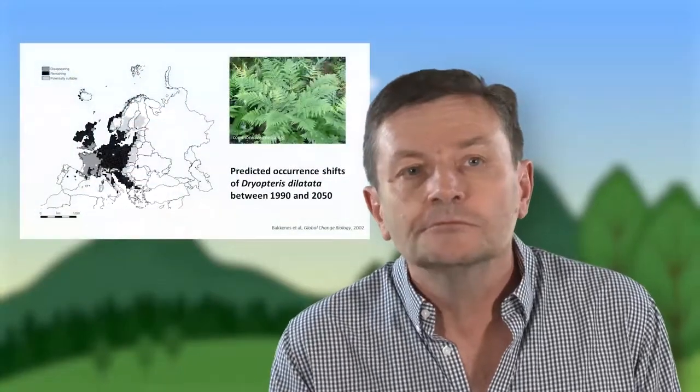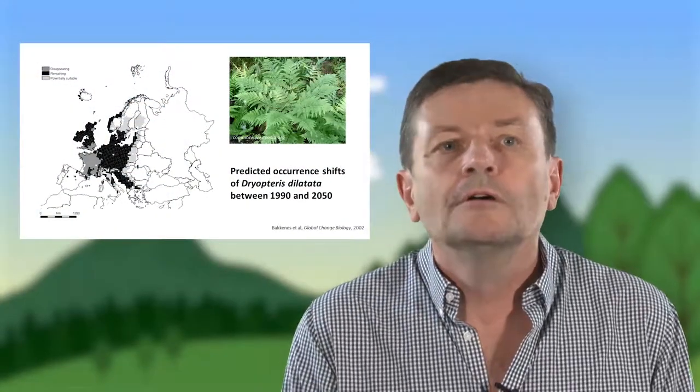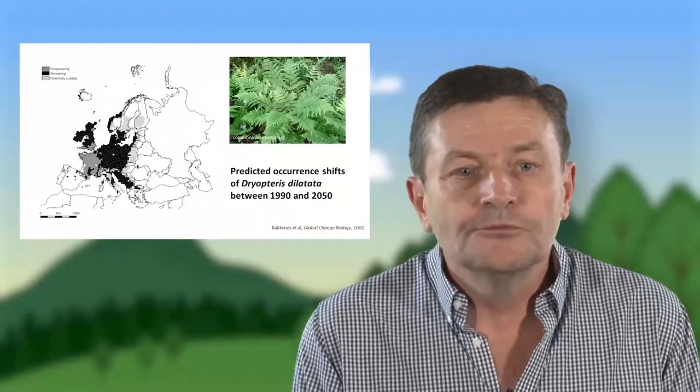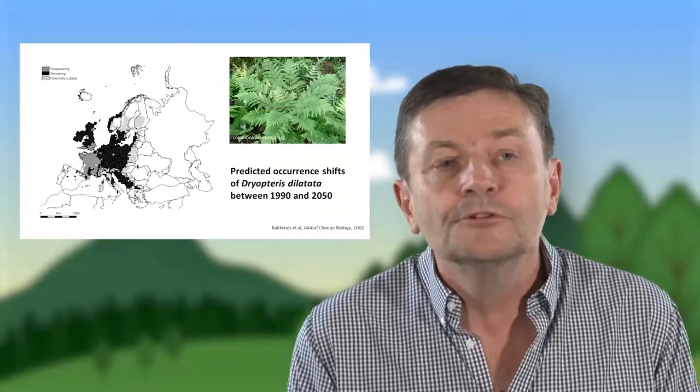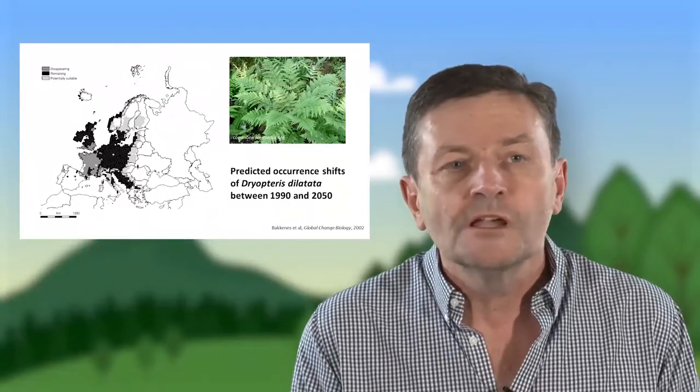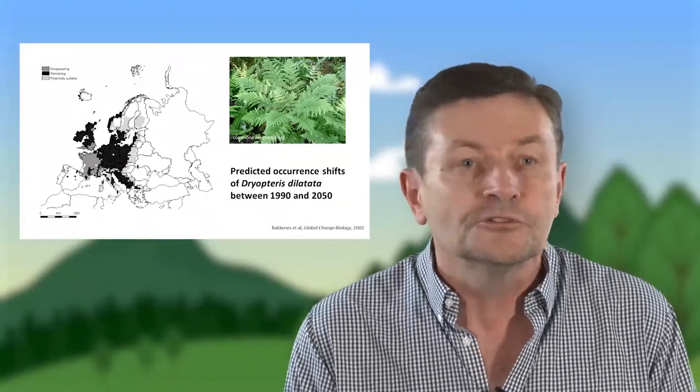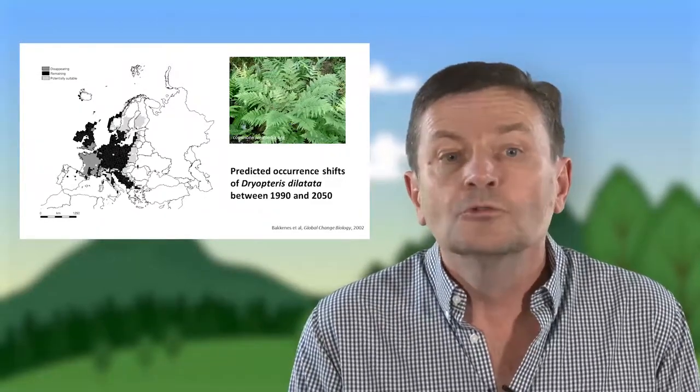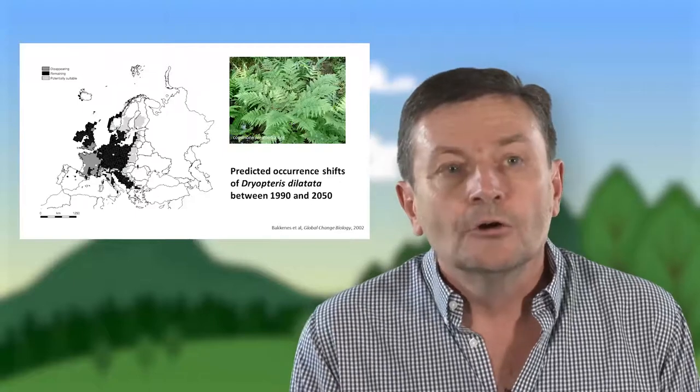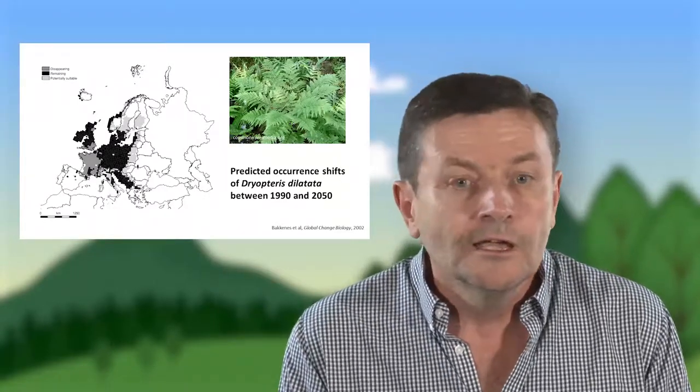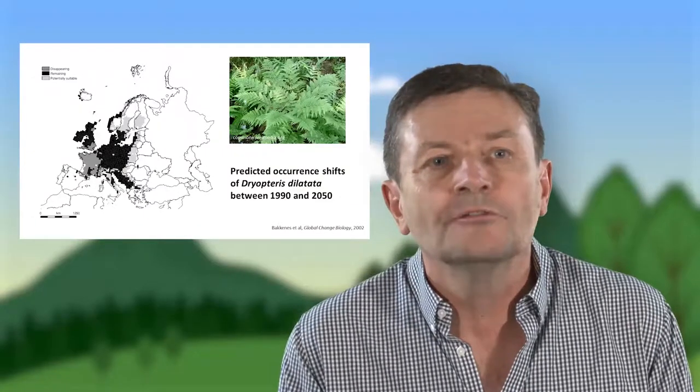Pour répondre à cette question, on fait des études de répartition future des différentes espèces. Ici on a un exemple d'une fougère. Cette fougère, elle vit dans des conditions de pluie et de température données. Ces conditions vont changer. Sa zone de compatibilité climatique, en quelque sorte ce qu'on appelle l'enveloppe climatique de l'espèce, va migrer vers le nord. Et donc sur la carte, on voit apparaître en sombre des zones futures d'implantation de la fougère et en plus clair, les zones que la fougère va abandonner.